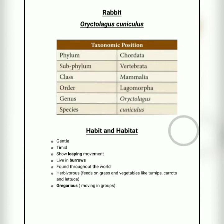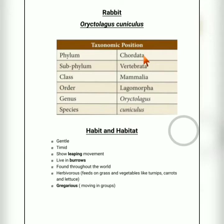The biological name of rabbit is Oryctolagus cuniculus. Learn this name thoroughly. First we will see about the taxonomic position. Phylum Chordata — Chordata includes all those organisms which have a backbone or notochord. Subphylum Vertebrata, since it has the backbone.